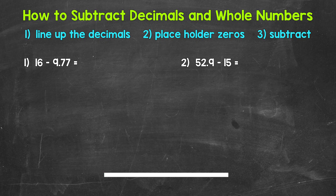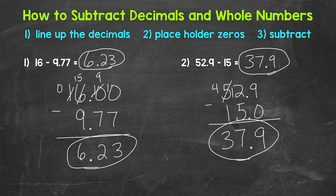Okay, so that was two minutes. Let's go over the answers. For number one, we have 16 minus 9 and 77 hundredths — that equals 6 and 23 hundredths. For number two, 52 and 9 tenths minus 15 equals 37 and 9 tenths.